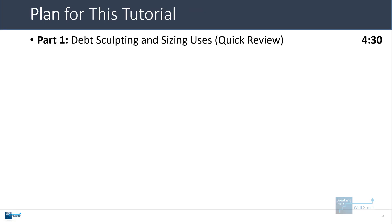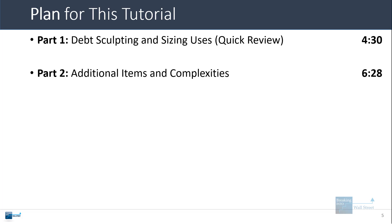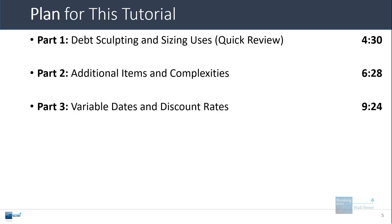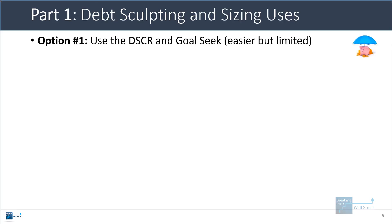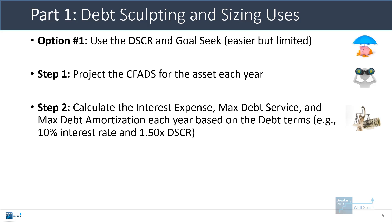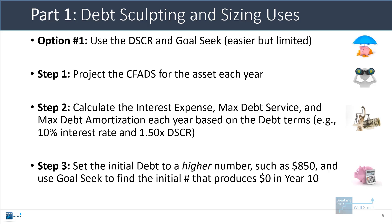To go into more detail, I'll start by reviewing some basics around debt sculpting and sizing. Then we'll go through additional items and complexities, talk about what to do with variable dates and discount rates, go through multiple debt tranches, and then discuss the DSCR and LLCR in covenant analysis. You could use the same method from the debt sizing and sculpting tutorial: project the cash flow available for debt service, calculate the interest expense, the max debt service, and the max debt amortization each year, then back into the proper starting balance.